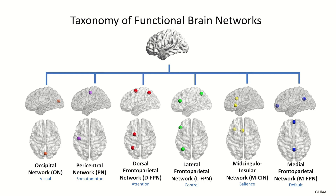The lateral frontoparietal network is typically associated with cognitive control. The mid-singulo-insular network is typically responsible for salience, which is a kind of process that mobilizes our attention when we are in need of something. And the last one, the medial frontal parietal network, which is typically associated with the default mode network. The neural networks approach may help us to understand which specific complex neural networks underlie specific mental processes.